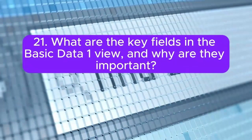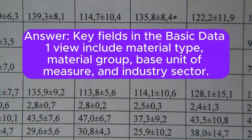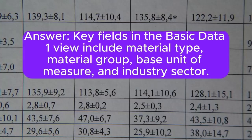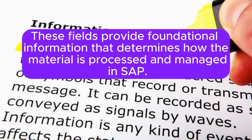Question 21: What are the key fields in the Basic Data 1 view, and why are they important? Key fields in the Basic Data 1 view include Material Type, Material Group, Base Unit of Measure, and Industry Sector. These fields provide foundational information that determines how the material is processed and managed in SAP.